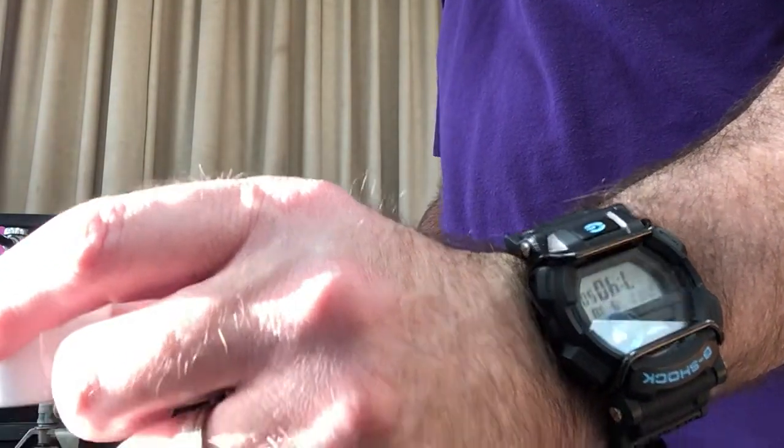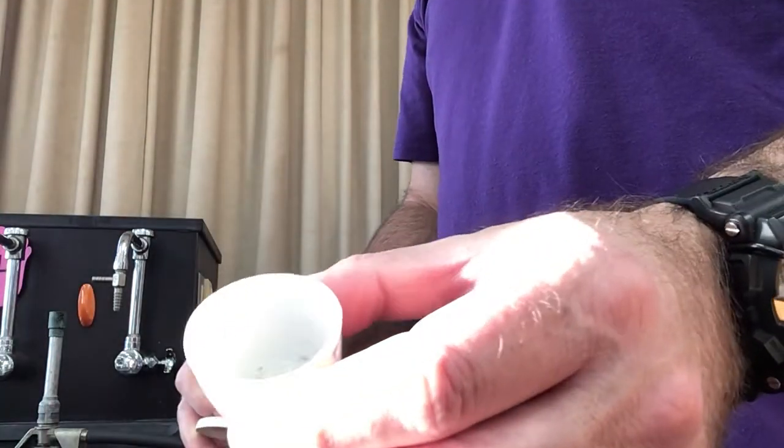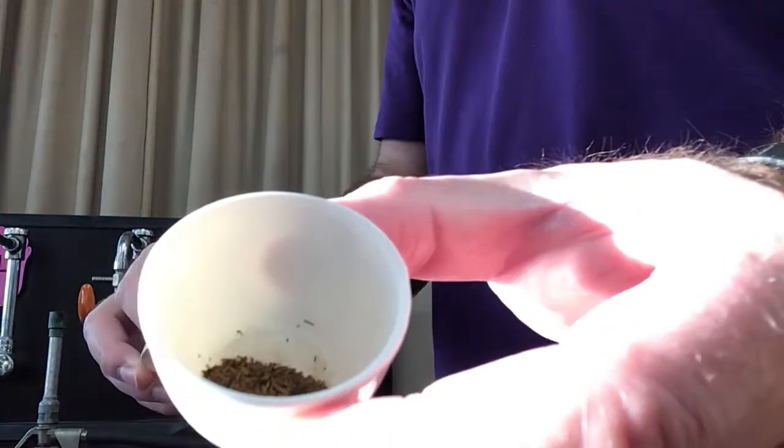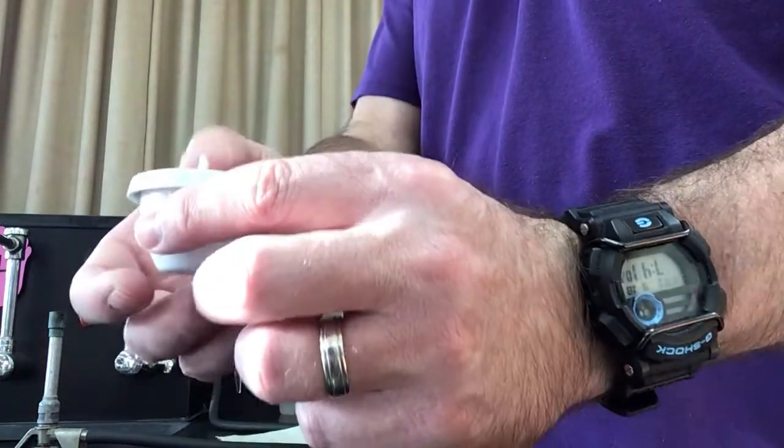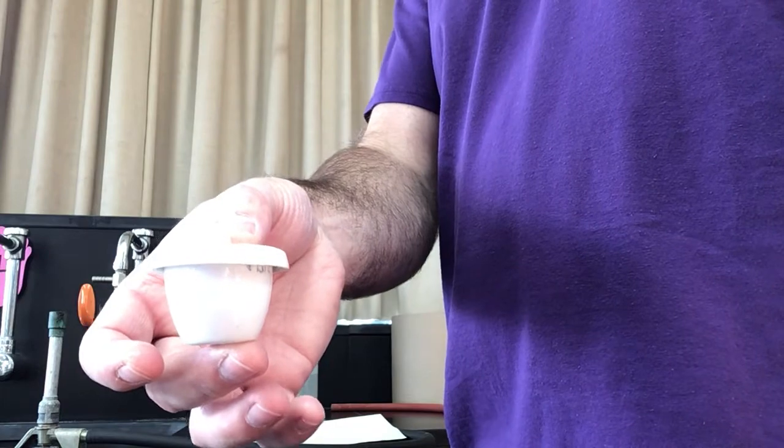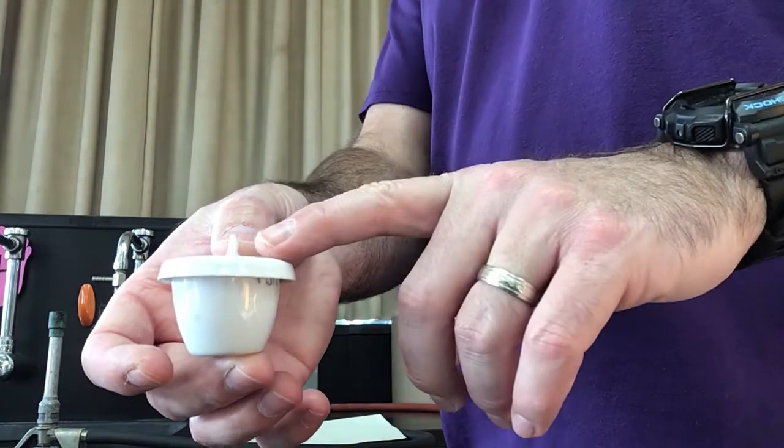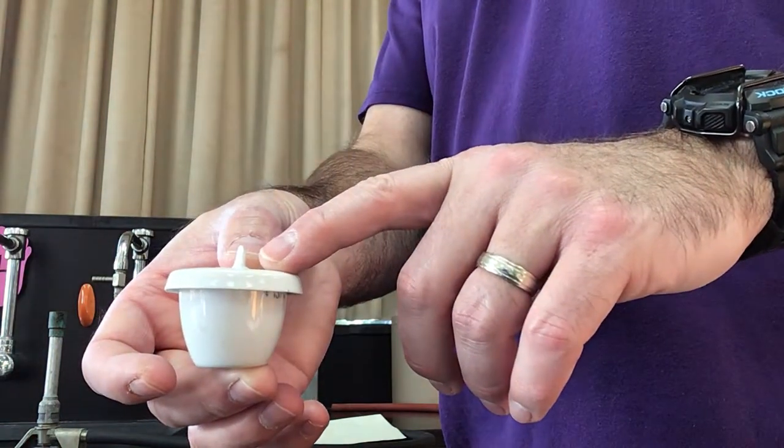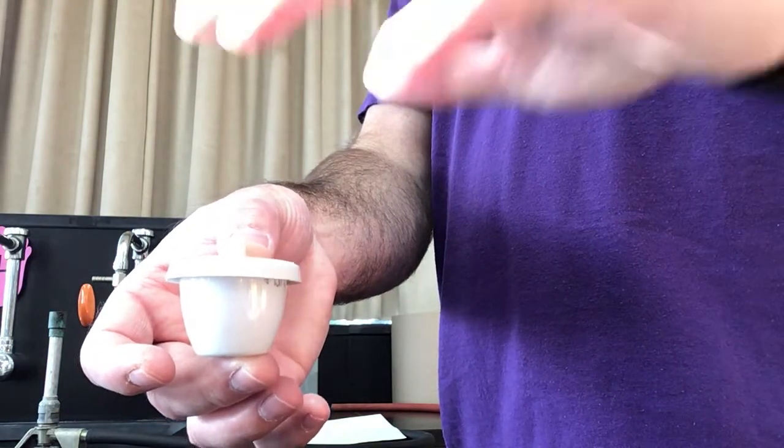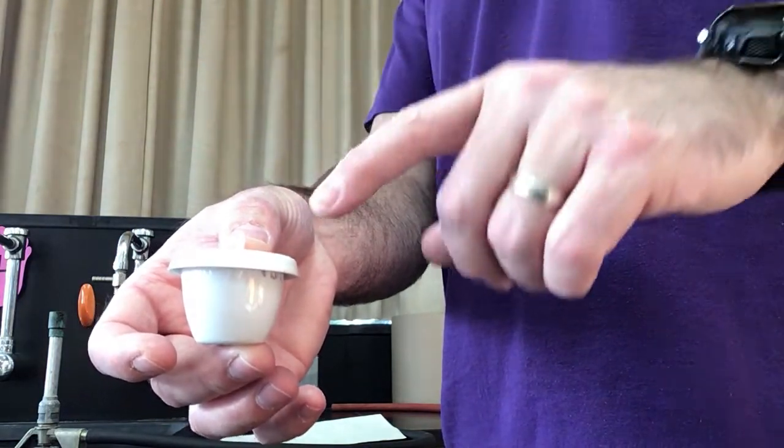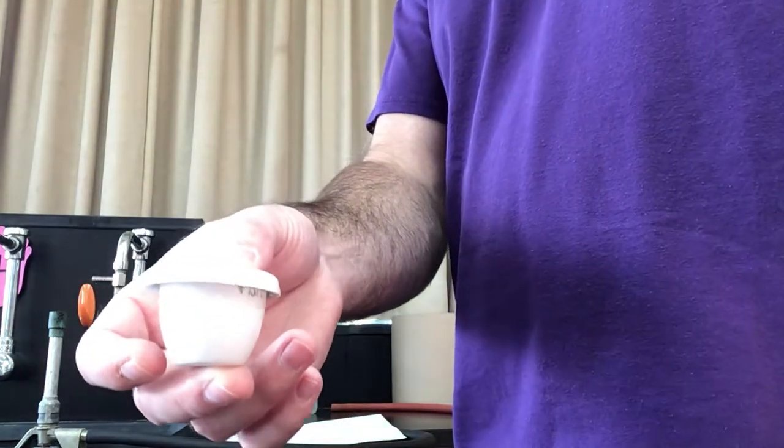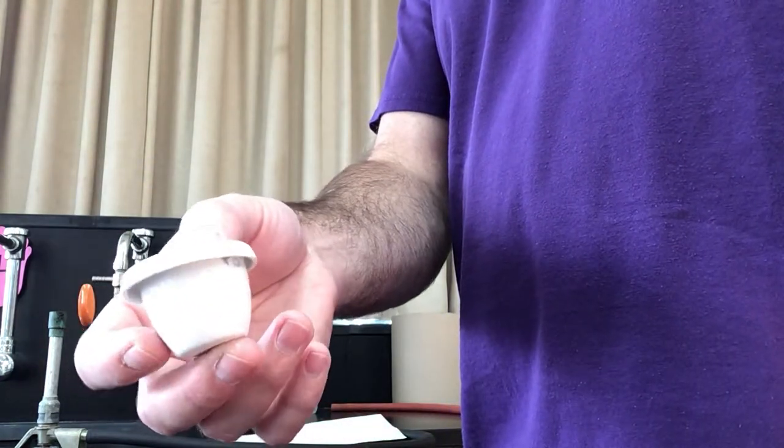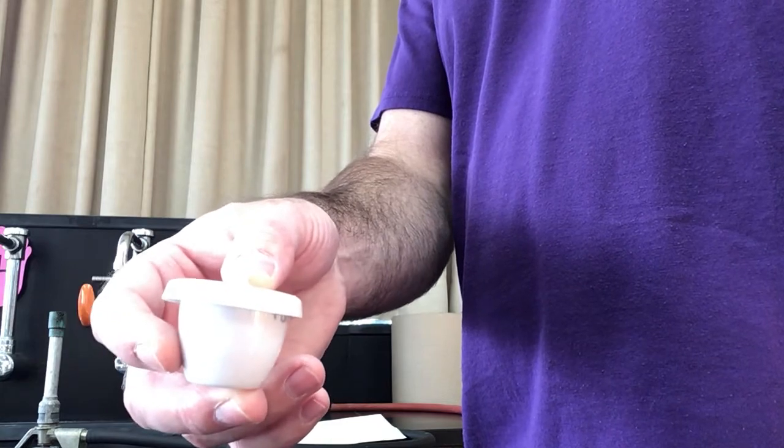The mass of my crucible plus the anhydrate was 11.48 grams. After heating it, the instructions said to cover it with this crucible top and let it cool down for about 15 minutes. The top is going to help so that the anhydrate doesn't absorb water from the atmosphere and change our mass.